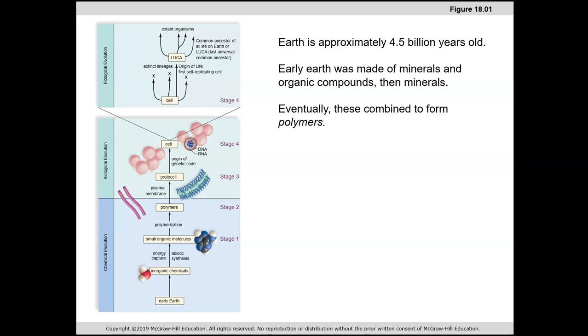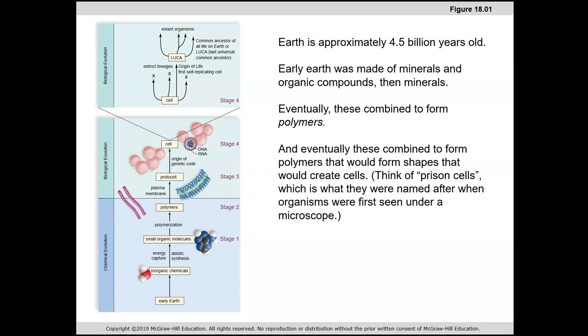Eventually those minerals and organic compounds combined together to form what is known as polymers—poly means many—so we made larger molecules. These organic molecules came together and made larger molecules. Those polymers all went together to create that plasma membrane we've talked about, and eventually that plasma membrane formed this circular shape, the sphere, that would become what we know of as a cell.